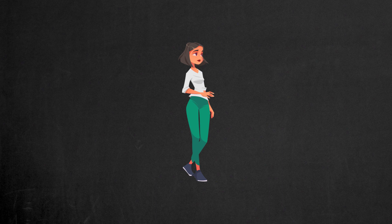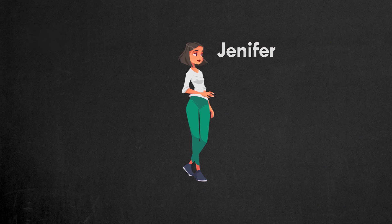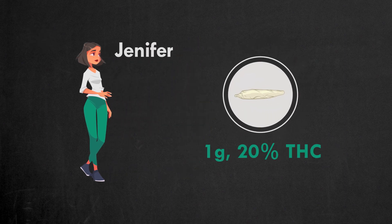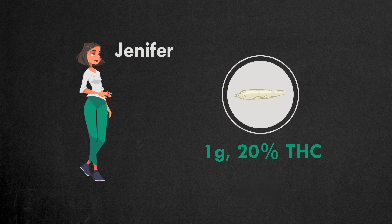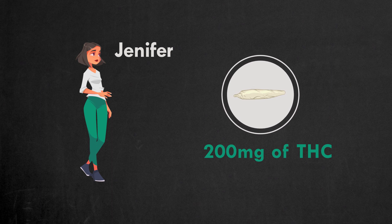Let's say we are calculating for the following person. Jennifer is a skinny girl and an occasional smoker. Jennifer smoked 1 gram of marijuana with 20% of THC content. That means there was 200 mg of THC in a joint.